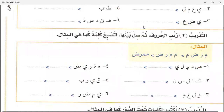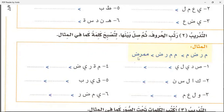Now we will do this question. Exercise two: Arrange the letters, then connect between them so that they become a word, like the one in the example. So they have given you four letters here: Meem, Raad, Doad, Meem. You need to arrange them and make a word. They have arranged them like this: Meem, Meem, Raad, Doad, and it becomes the word Mumarvid.